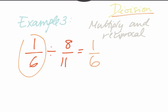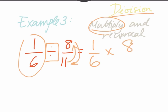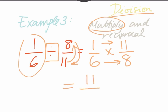The second fraction, you need to invert it — that means 11 will go up and 8 will go down. Then you have a multiplication and you do the same thing: you multiply straight forward. 1 multiplied by 11 is 11, and 6 multiplied by 8 is 48. So the answer is 11 over 48.